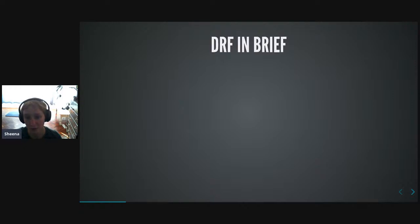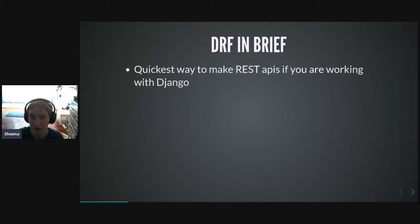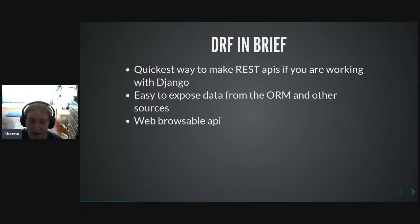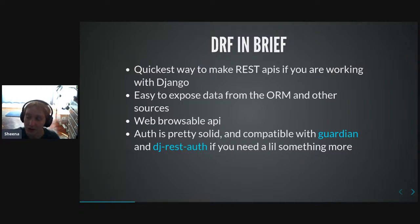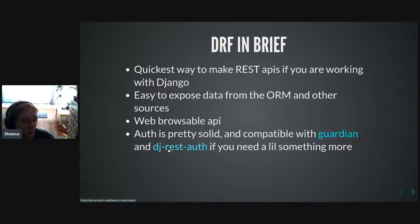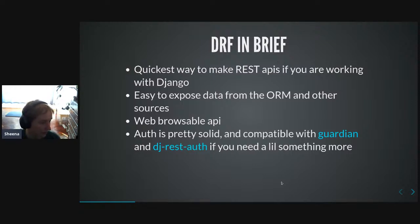Next up is DRF, Django REST Framework. This is something you can bolt onto Django and it's basically the quickest way to make REST APIs. It makes it very easy to expose data from the ORM or from other sources. It has some very nice features like the web browsable API, which I'll show you shortly. It has solid authentication and authorization out of the box. Generally I find the authentication a little insufficient, so I'll add something like Guardian for object-level permissions and DJ REST auth for better authentication endpoints.